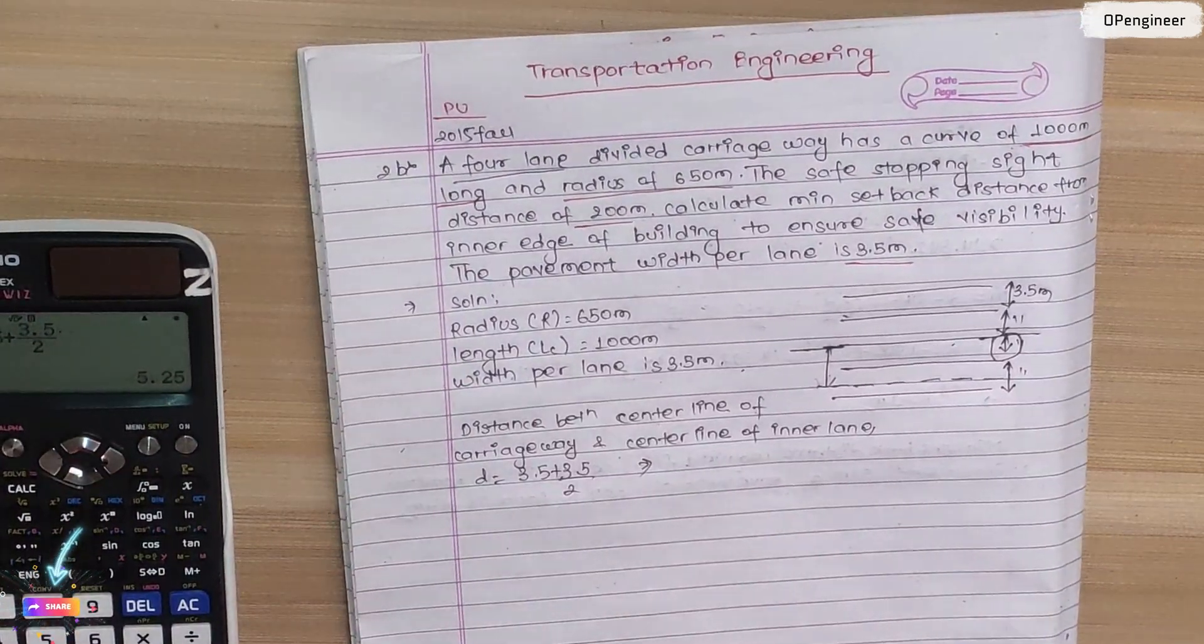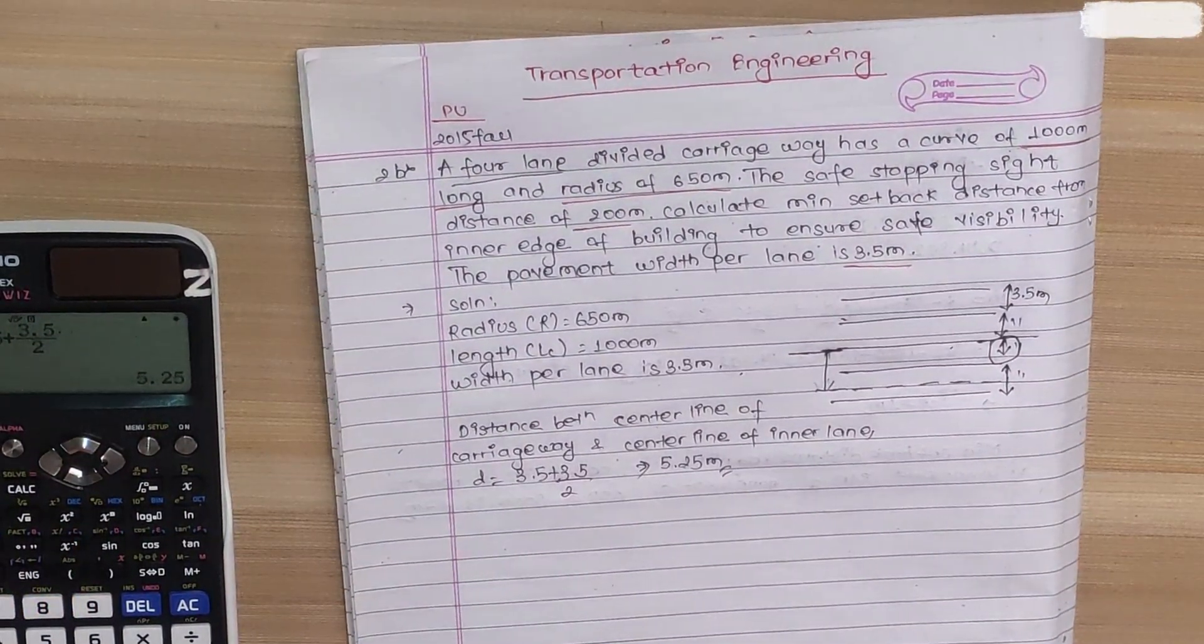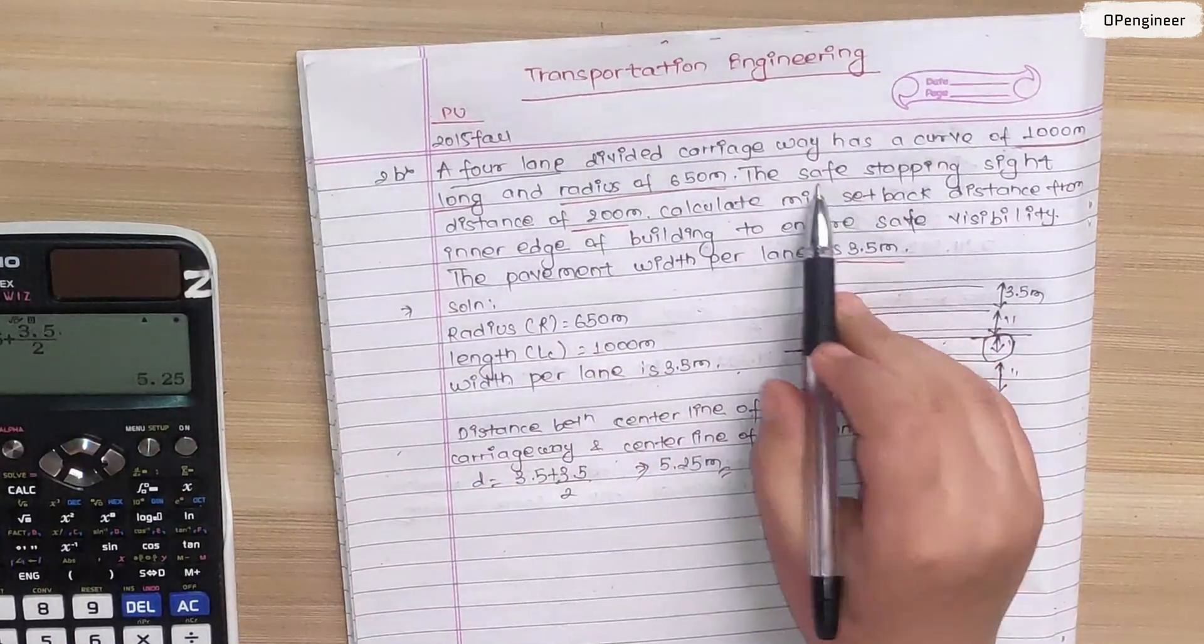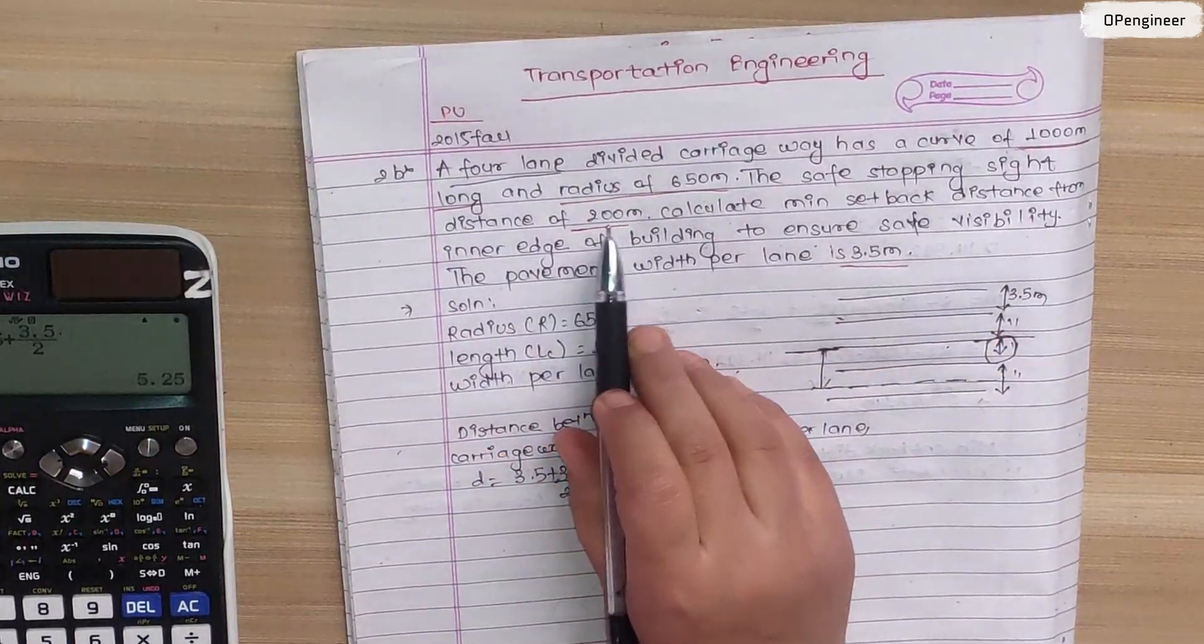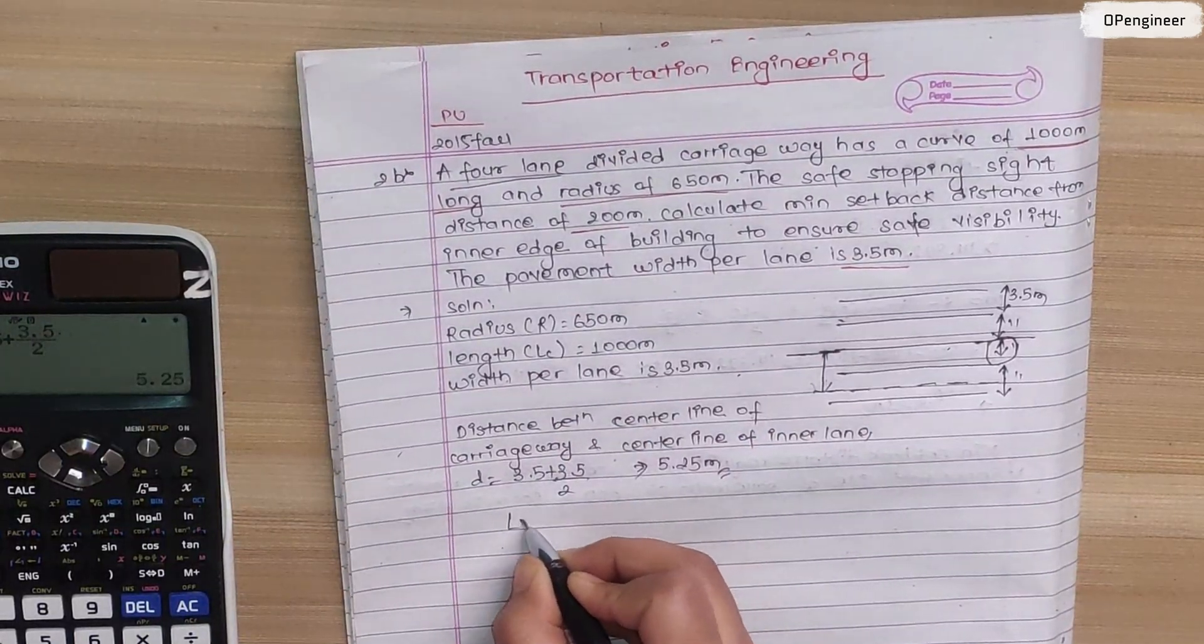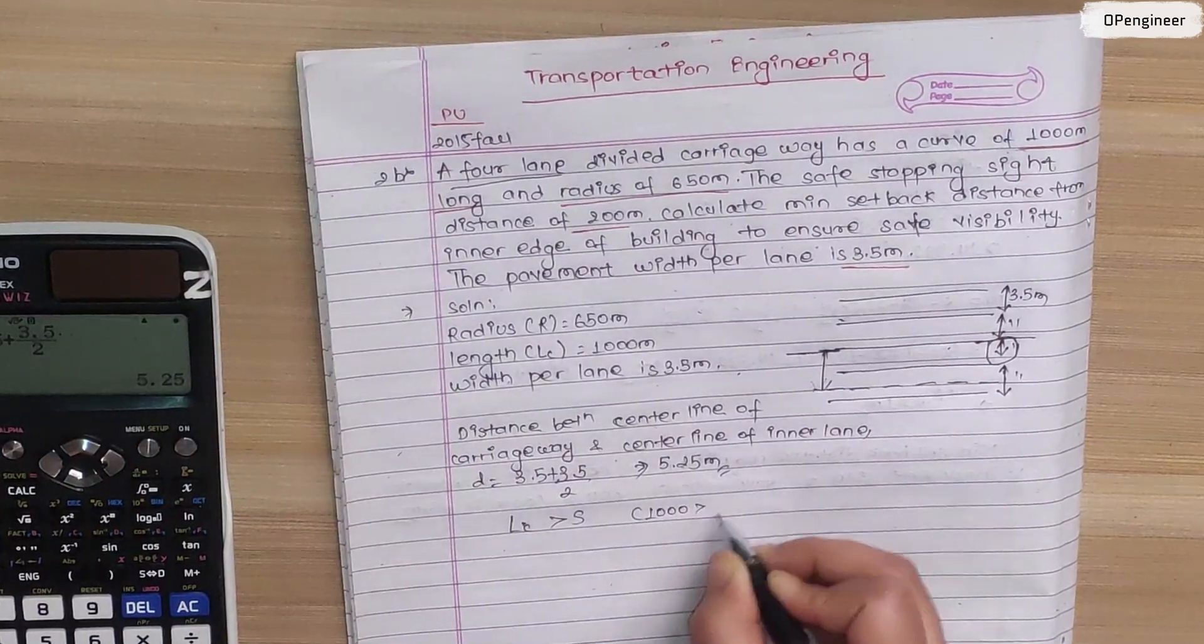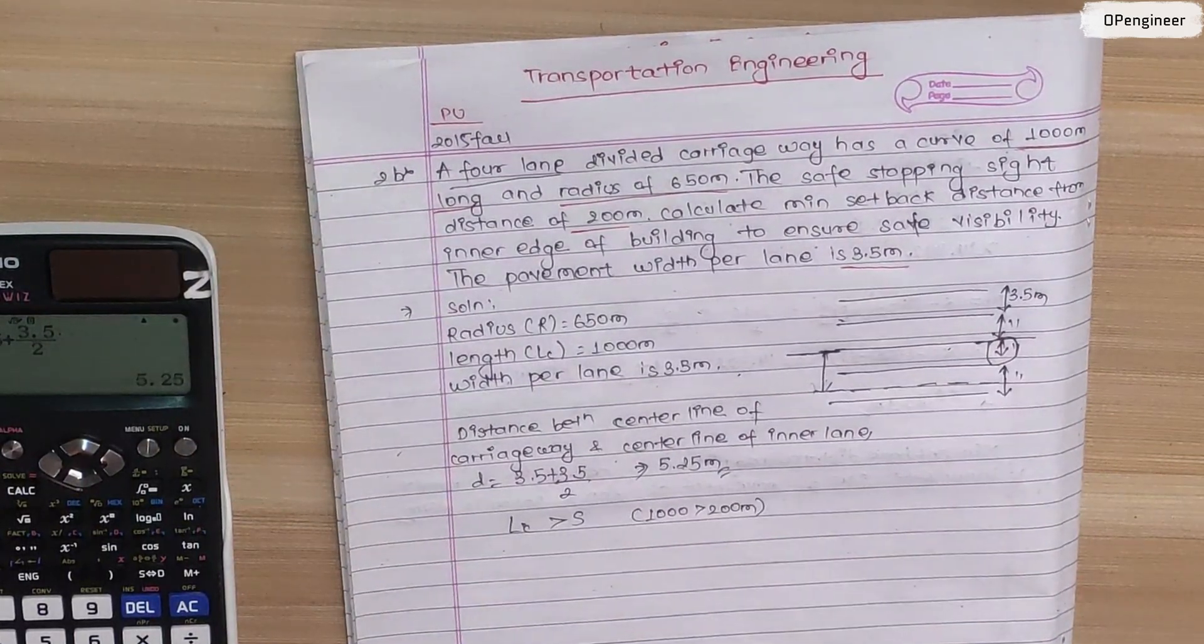This is 5.25 meters. The length of curve is 1000 meters, stopping sight distance is 200 meters. The length of curve is greater than stopping sight distance, which is 1000 meters is greater than 200 meters.